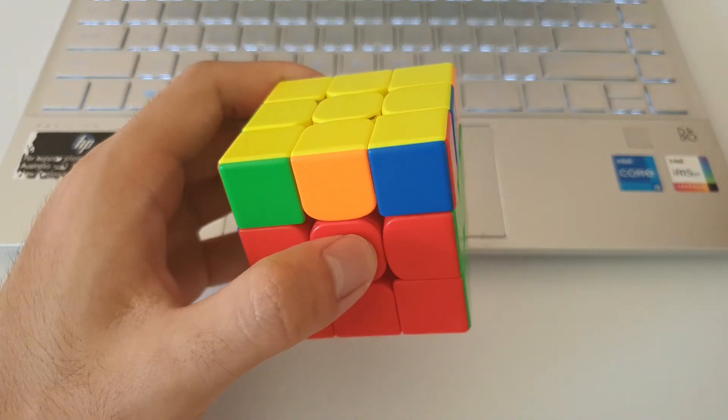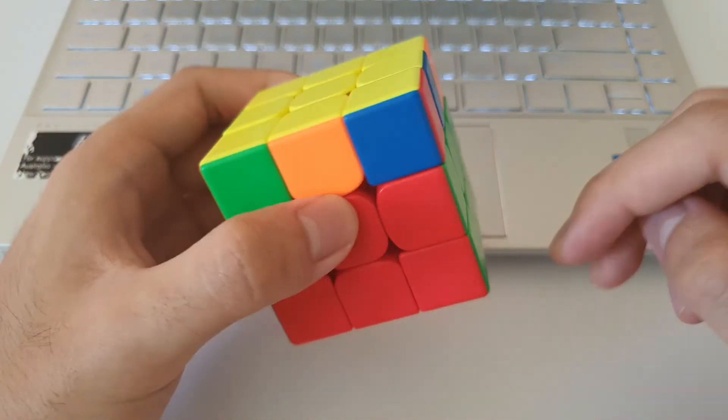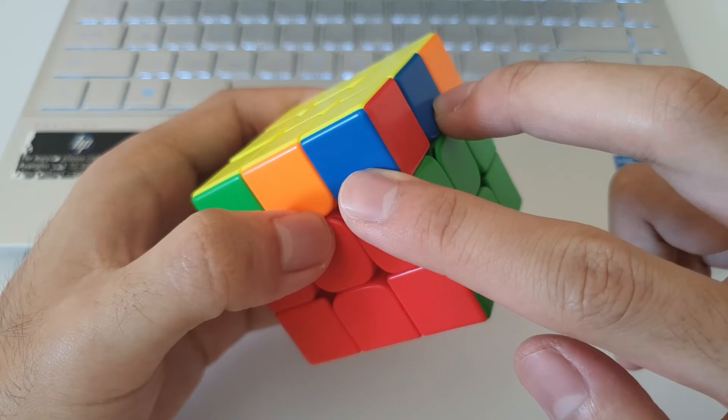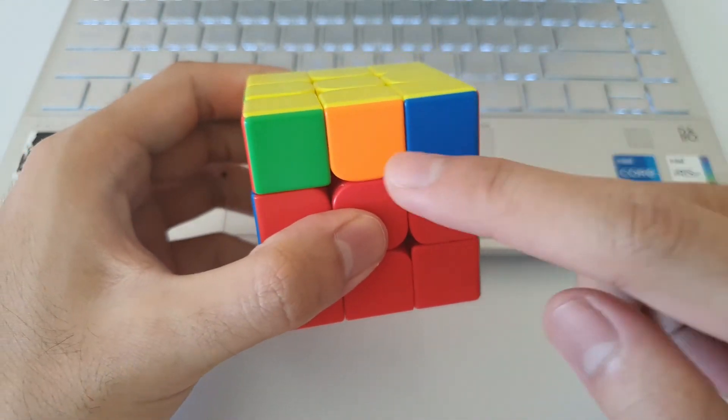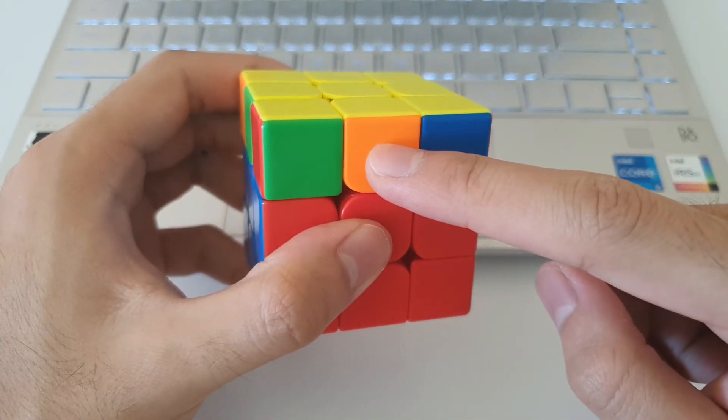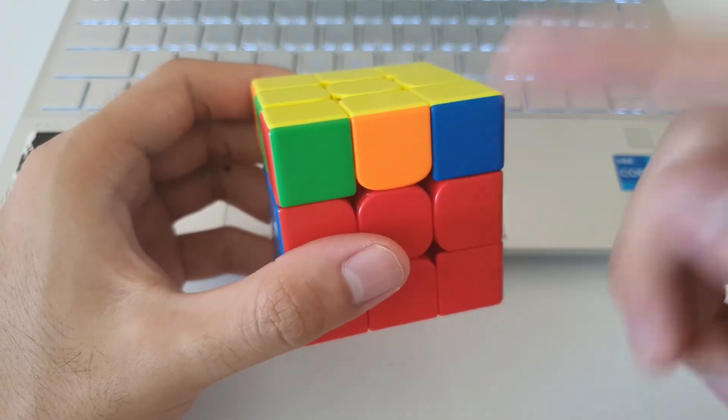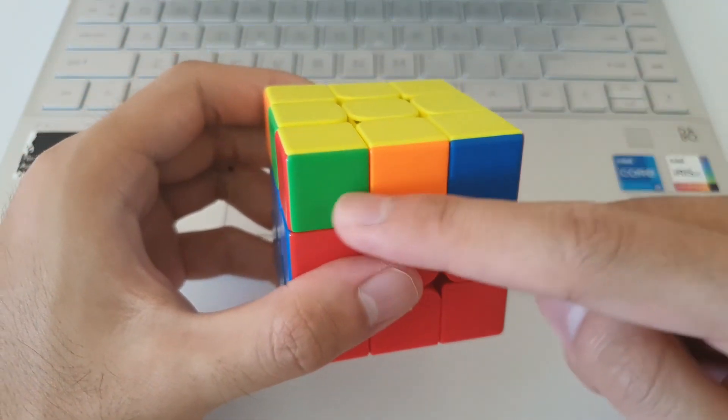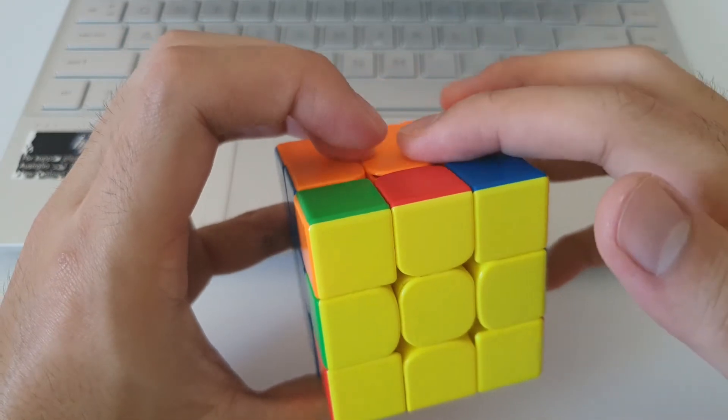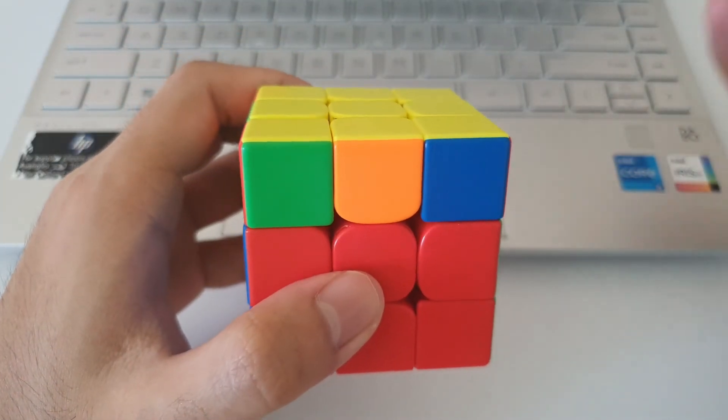Here, again, we have an E-perm, and this is holding it at the correct angle because, once again, these two colours are matching. We'll notice that we have an orange edge at the front on a red side. This means that, after the algorithm, this side will be orange, but orange actually belongs at the back, so the AUF here is a U2.